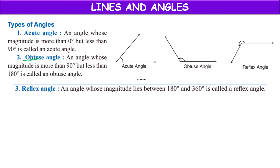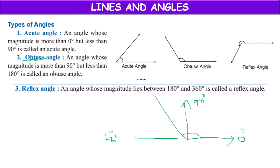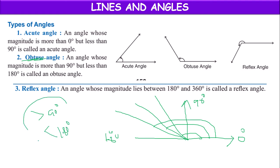Next, obtuse angle means an angle whose measurement is greater than 90 degrees but less than 180 degrees. So any angle between 90 and 180 degrees is called an obtuse angle.